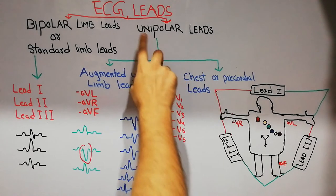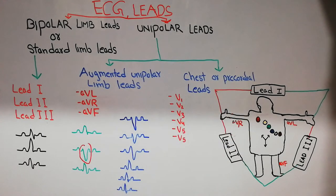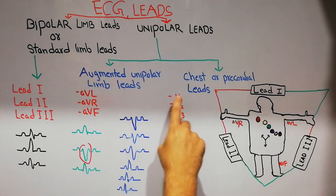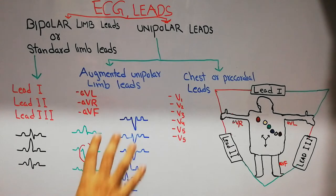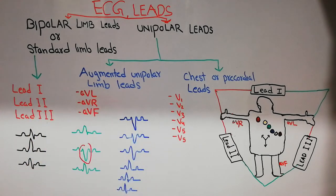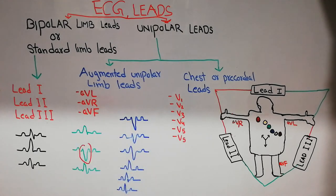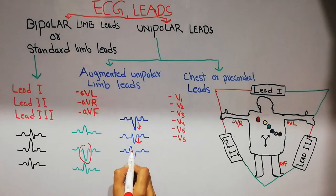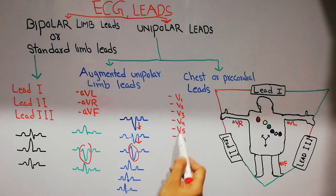The other category of unipolar leads includes the chest or precordial leads. Those leads are six in number: V1, V2, V3, V4, V5, and V6. Looking at the morphology of the ECG pattern, the first two leads have a negative deflection, the third is almost isoelectric with equal negative and positive components, and the remaining leads — V4, V5, and V6 — have positive deflections.